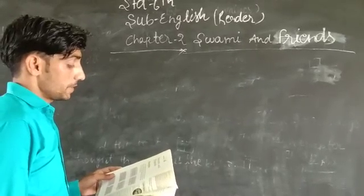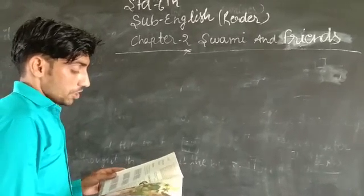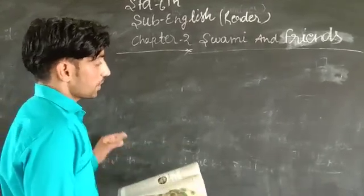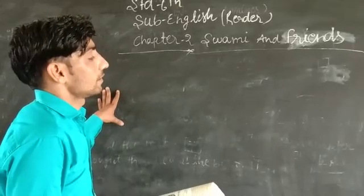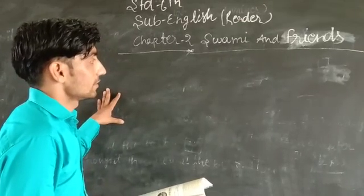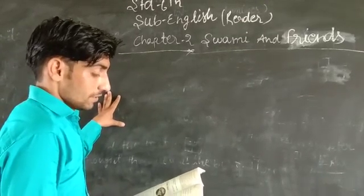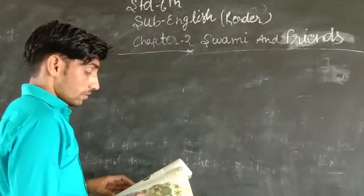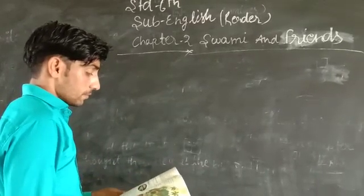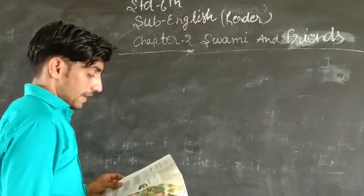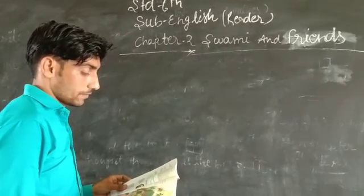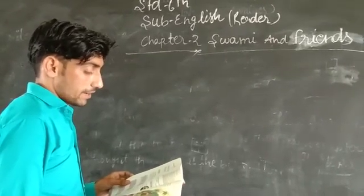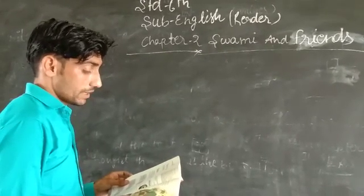Swami aur uske mit (Swami and friends). You have already read this chapter in 4th class. About the chapter: the following is an excerpt from R.K. Narayan's first novel Swami and his friends. R.K. Narayan ka ye pehla novel hai, Swami and his friends.